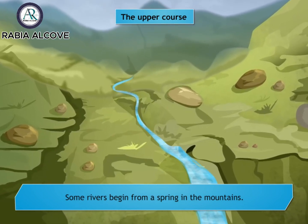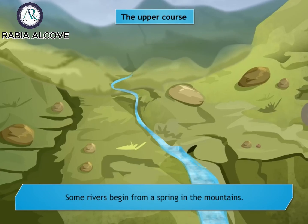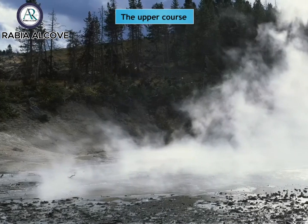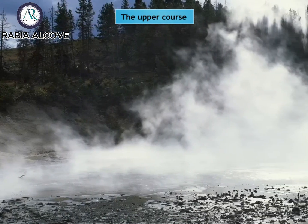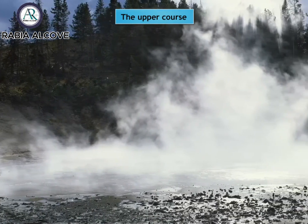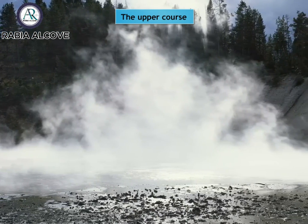Springs are formed when groundwater pushes its way to the surface through holes or weak places in the rock and starts to flow downhill as a stream.